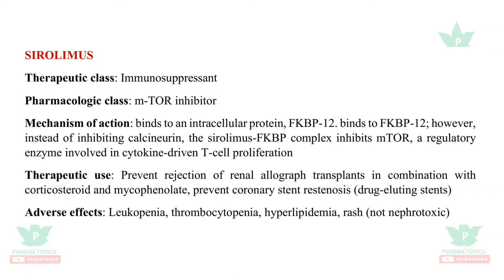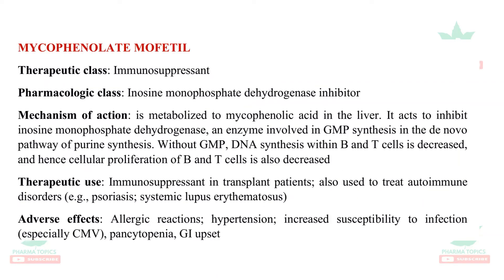Sirolimus is an immunosuppressant. It binds to FK-BP12 similar to tacrolimus, but the sirolimus–FK-BP12 complex inhibits mTOR — it does not inhibit calcineurin. mTOR is involved in cell proliferation. It is used to prevent rejection of renal allograft transplants in combination with corticosteroids and mycophenolate, and to prevent coronary stent restenosis in drug-eluting stents. Adverse effects include thrombocytopenia, leukopenia, hyperlipidemia, and rash. Notably, this drug is not nephrotoxic.